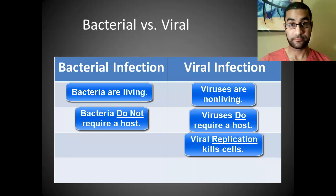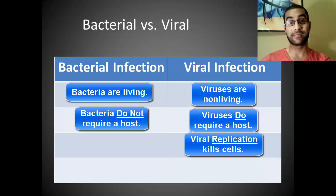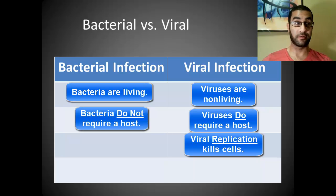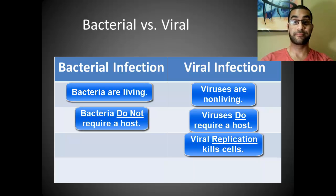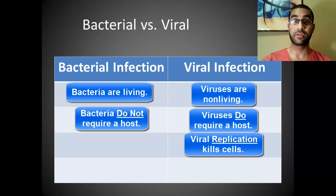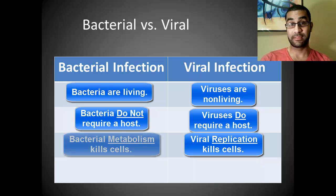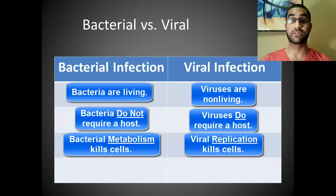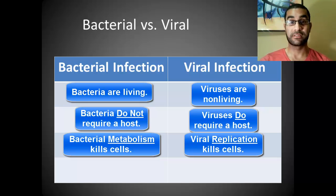Bacteria do not kill cells for that reason. Bacteria can function on their own and don't need to be in a cell to replicate. What actually kills the cell in a bacterial infection is a parasitic, predation scenario — the bacteria feeds off of the cells and gains nutrients from them. Losing all of its nutrients and important components is what kills the cell. So viral replication is what kills the cell in a viral infection, but bacterial metabolism is what kills the cell in a bacterial infection.